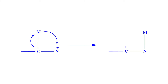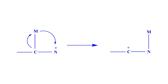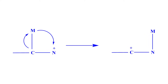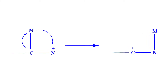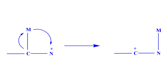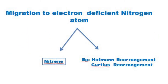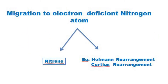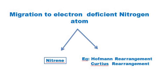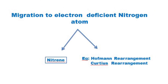In migration to electron-deficient nitrogen atom, the migrating group migrates to an electron-deficient nitrogen atom, and the reactive intermediate in this rearrangement is a nitrene. Examples for this rearrangement are Hofmann rearrangement and Curtius rearrangement.